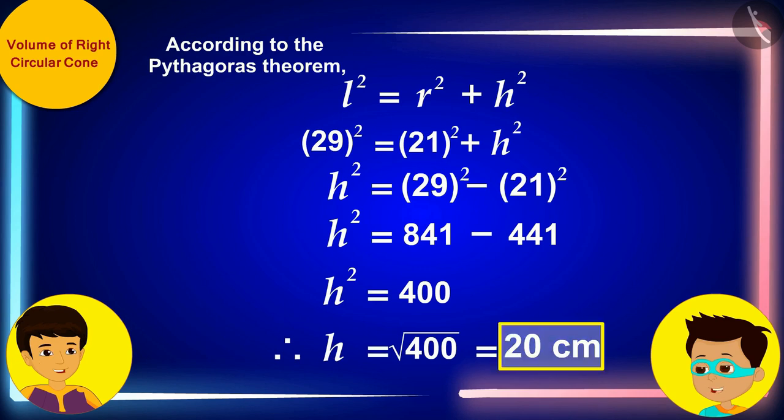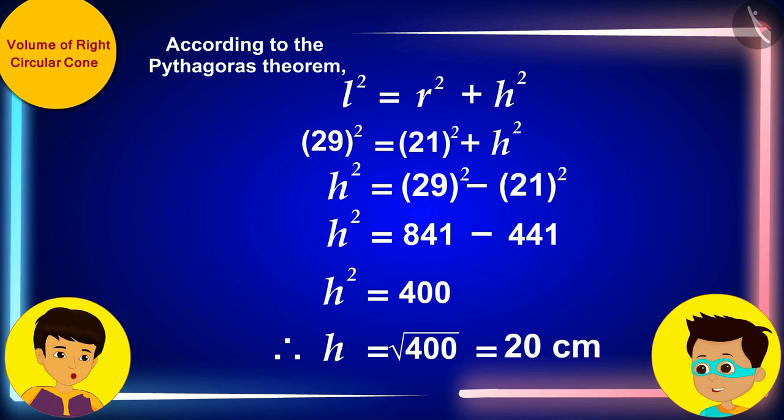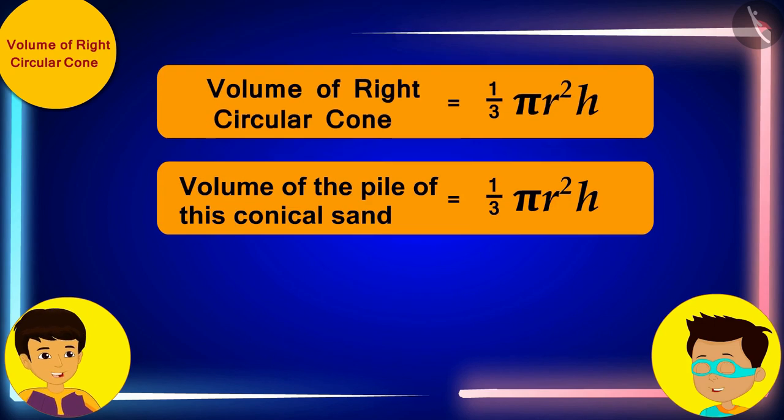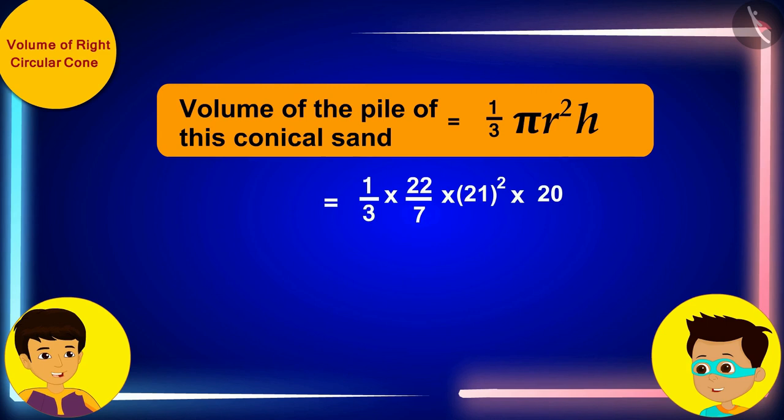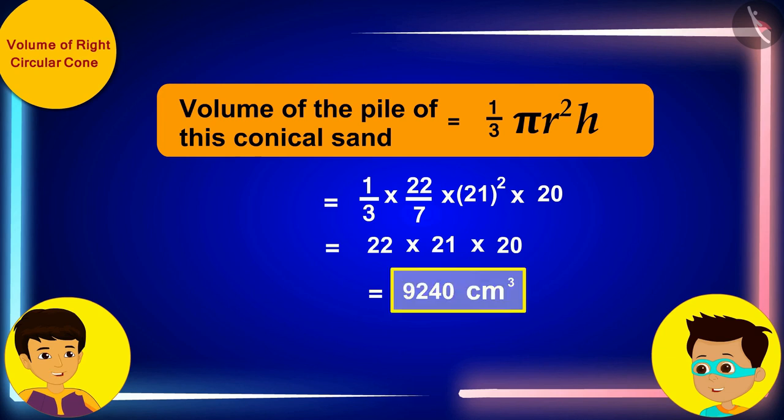Got it, the answer is 20 centimeters. Oh wow! Now let me quickly replace r and h in this formula respectively. The radius of the conical pile of sand is 21 centimeters and the height is 20 centimeters. Thomas, we got our answer! A bag of sand has 9,240 cubic centimeters of sand.